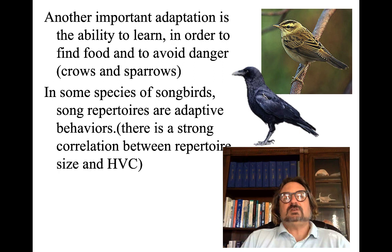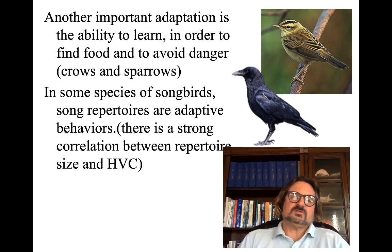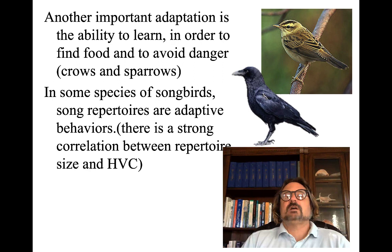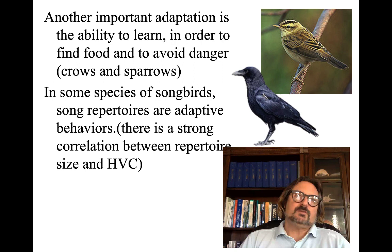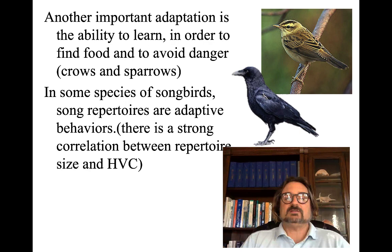Another important adaptation is the ability to learn in order to find food and avoid danger — seen in crows and sparrows. Certain birds will drop food on tombstones or rocky shores to crack open shellfish and molluscs. Some birds go to truck stops to feast on insects caught in the grills of big rigs. This is an innovative strategy, and these particular birds have larger forebrains because they engage in this kind of planning and strategizing to master their environments.